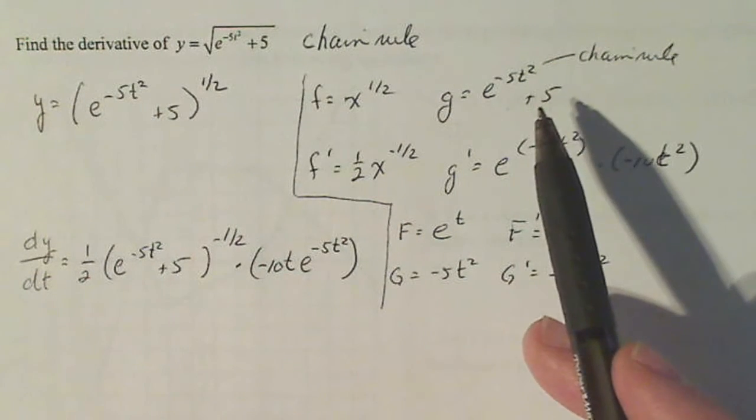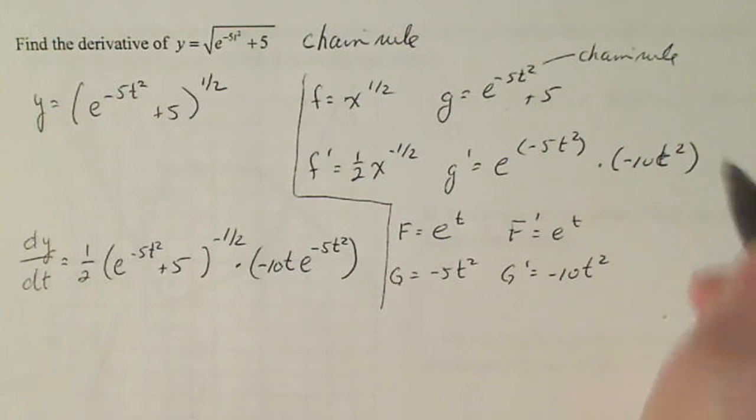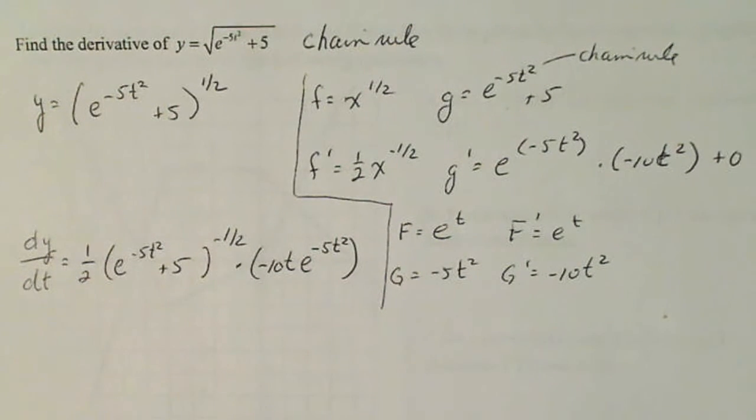Wait, is anybody wondering where that plus five went? Well, that plus five is a constant and the derivative of a constant is zero. So you can think of like adding zero there on the end.